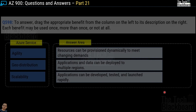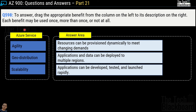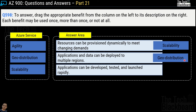Question 598 is a drag-and-drop question where you match Azure services with their definitions. Given services: agility, geo-distribution, and scalability. First definition — 'Resources can be provisioned dynamically to meet changing demands' — matches scalability. Second — 'Applications and data can be deployed to multiple regions' — matches geo-distribution. Third — 'Applications can be developed, tested, and launched rapidly' — matches agility.